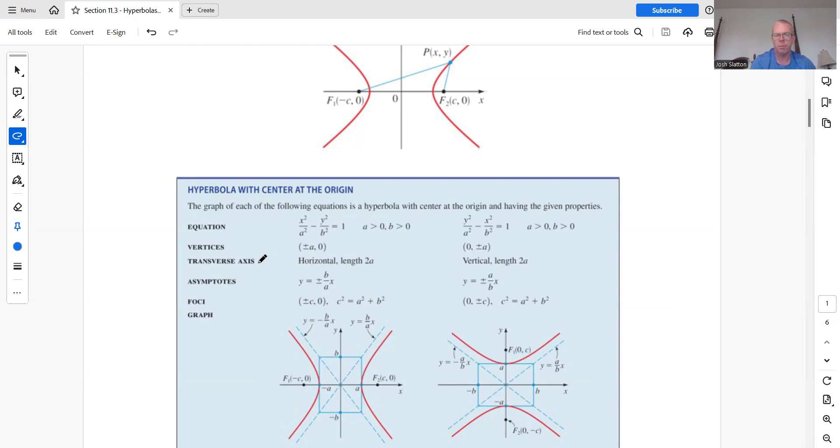We have what's called the transverse axis. That's just the distance between the two parts of this. And that's just going to be 2A. So whatever that number is under the first term here, the square root of that number, double it and that will give you the length between these two.